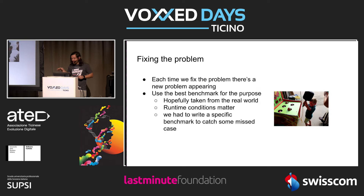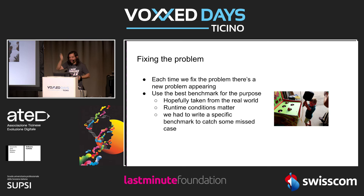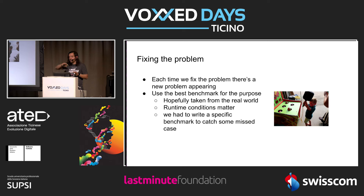How do we fix the problem? Each time you fix the cache problem for one type, the problem moves to a different type — like Whack-a-Mole. The important thing is to use a benchmark taken from the real world. If you don't have one, write one, but make sure it resembles the real world — you don't want it to be too synthetic.